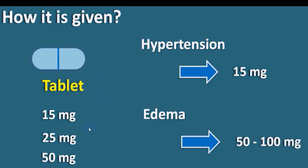Chlorthalidone is available in different strengths. For hypertension, the most common strengths used are 12.5 mg and 6.25 mg. For edema, a larger dose of 50 up to 100 mg is given. Above 25 mg, the chances of side effects increase — at higher doses, uric acid, lipids, and glucose are elevated, and electrolyte imbalances (hyponatremia, hypomagnesemia, hypokalemia, hypochloremia, metabolic alkalosis, and elevated calcium) become more likely.